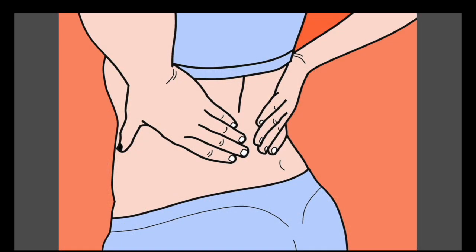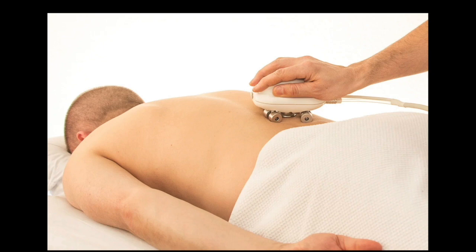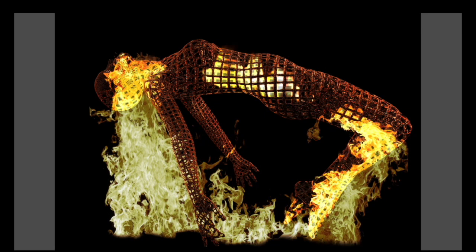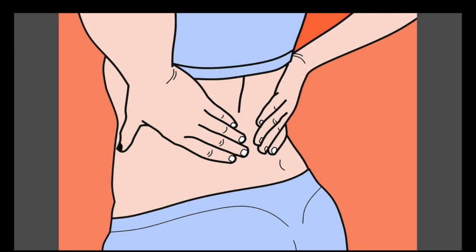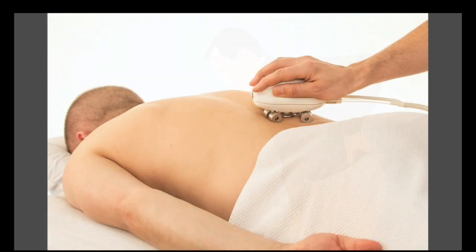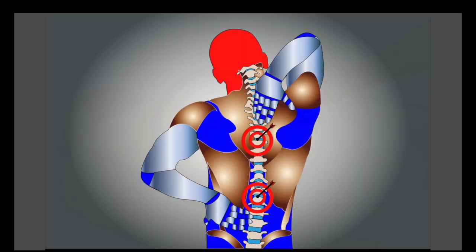Examples of these treatments include: for pancreatitis, a surgeon may remove a bile duct obstruction or drain fluid from the pancreas. For kidney stones, a doctor may recommend medication or shockwave therapy to break up the stones. For endometriosis, a doctor may recommend medication or surgery to remove excess tissue.